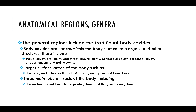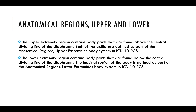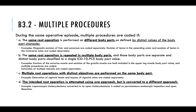We talked about the general anatomical regions, such as the main body parts, the body cavities, the head, neck, chest wall, abdominal, and upper and lower back. Guideline B3.2 covers multiple procedures — this is when you need more than one procedure code for a case, and there are four circumstances in which this happens. The first is the same root operation performed on different body parts — for example, taking out both ovaries. It's the same root operation (resection), but you have different body parts: the right and left ovary.